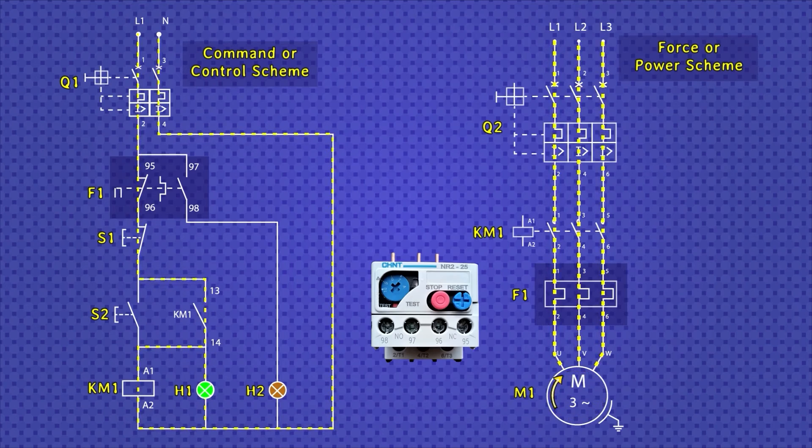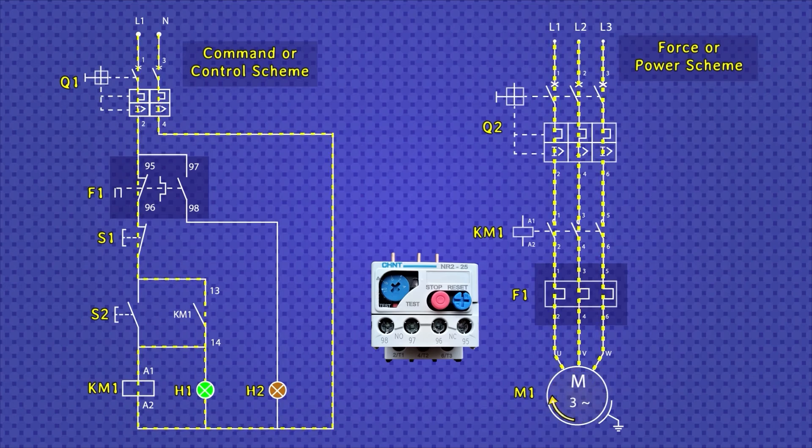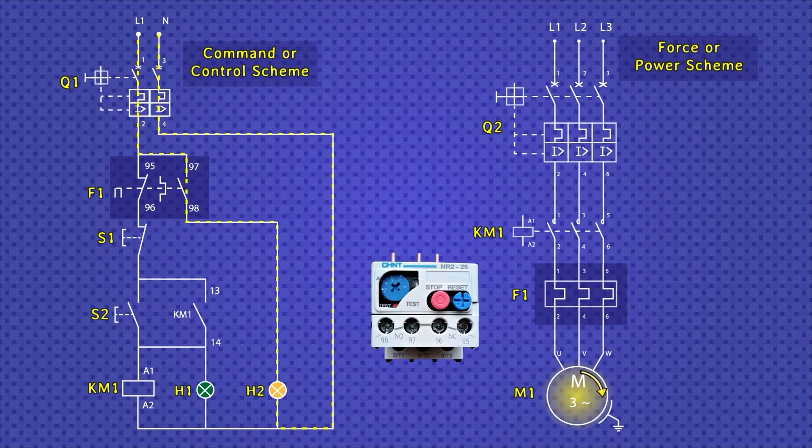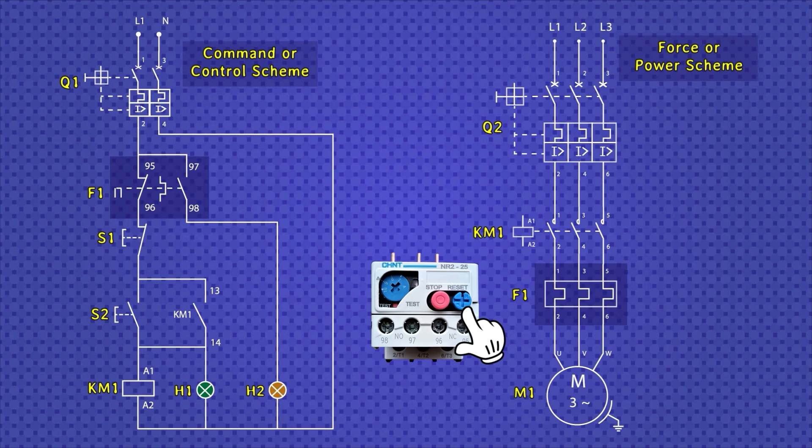If the motor is overloaded, then it will start to heat up. And that is where the thermal relay fulfills its function, de-energizing the contactor coil so that it can open its contacts and let the current circulate. Now, to get the engine running again, the following must be done. Find and repair the fault and reset the thermal relay by pressing reset if it is in manual mode.